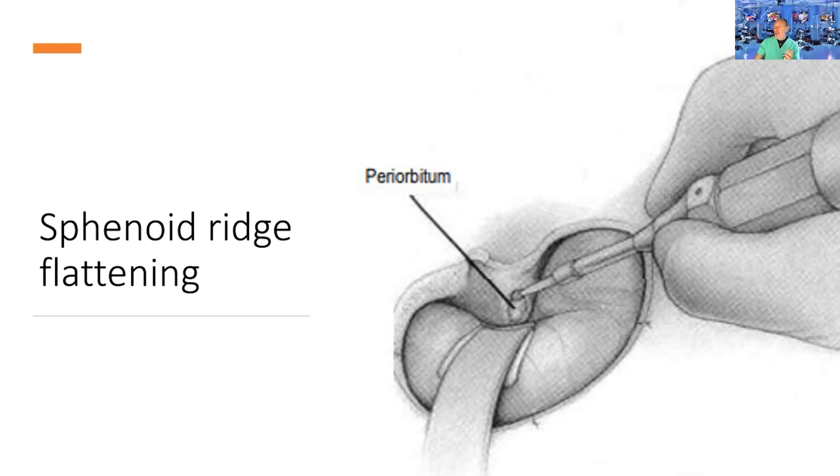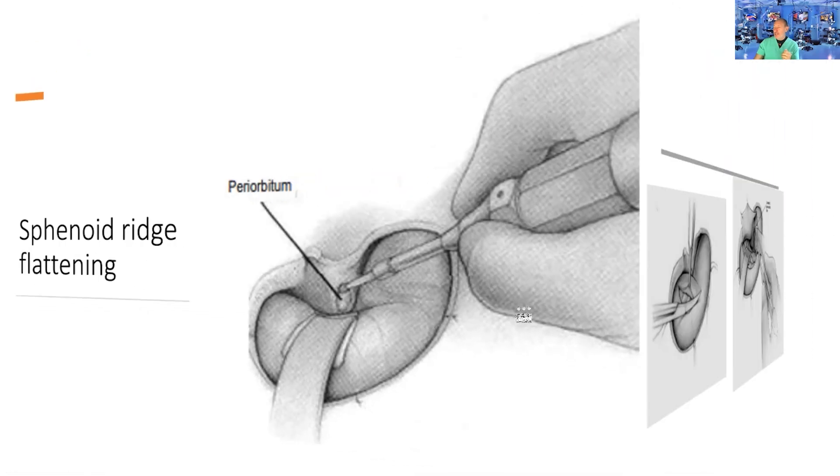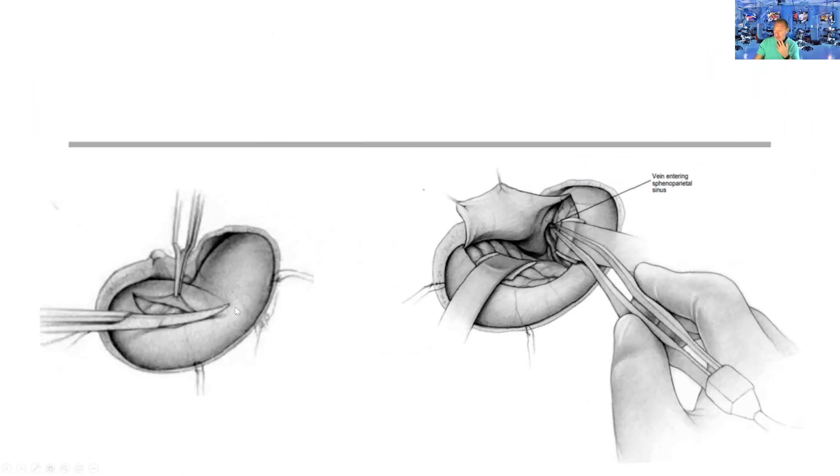Mastering drill use is very important. For dura opening, the classic technique is a C-shaped curvilinear incision from temporal to frontal to temporal lobe, reflecting the dura anteriorly with sutures.